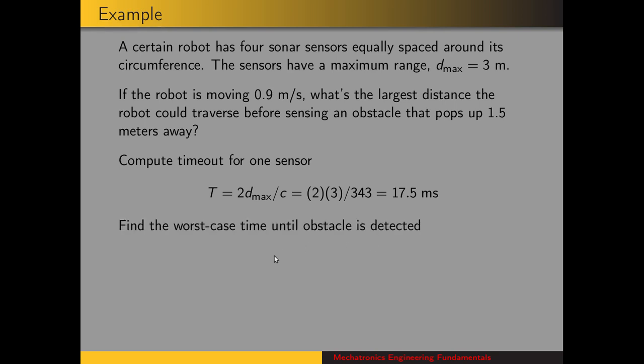So now let's calculate the worst case scenario time until the obstacle is detected. So that scenario where I mentioned before, the robot has just finished a scan on the front sensor, the obstacle appears, the robot will sense on the left, the back, the right, and then on the front again. We'll call that amount of time delta t. So it's three times this timeout for the left, back, and right sensors, plus two times the distance to the obstacle divided by the speed of sound. And if we calculate that, we get 61.2 milliseconds.